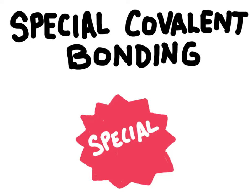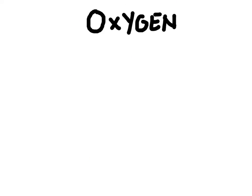This video we're going to talk about some special covalent bonds. We'll start here with molecular oxygen. Molecular oxygen is found as a diatomic element, so it has two oxygen atoms bonded to itself.